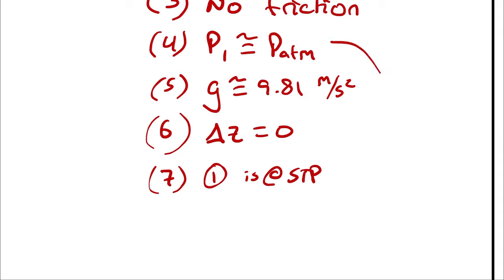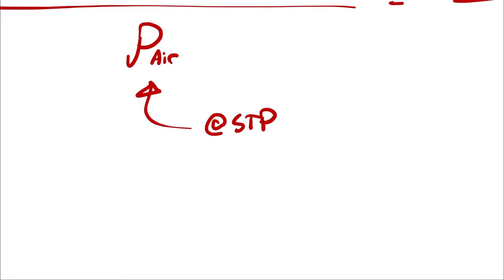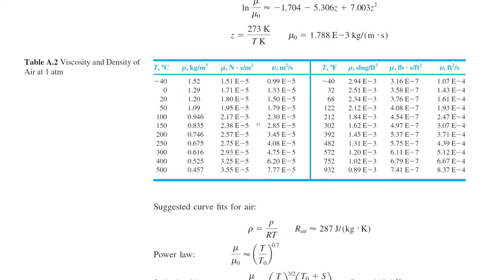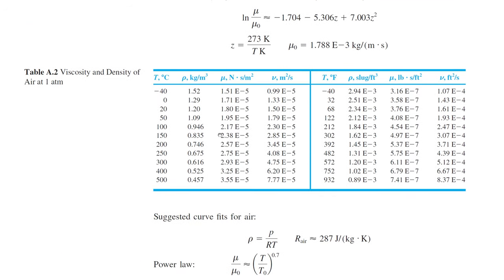That standard temperature and pressure assumption is consistent with our earlier assumption that P1 is at atmospheric pressure. For the density of air, we jump to table A2, which gives density and viscosity of air at one atmosphere. At standard temperature of about 20°C, we use a density of 1.2 kilograms per cubic meter. Alternatively, table A4 provides properties of various gases at standard temperature and pressure, including dry air. Since we need density, we plug in 1.2 kg/m³ as per table A2.